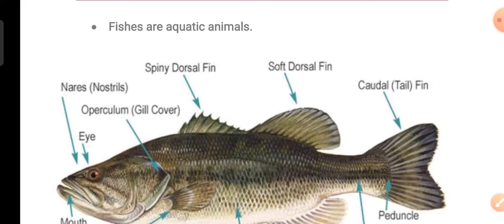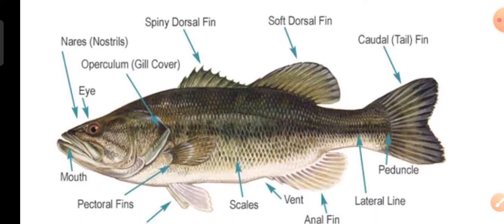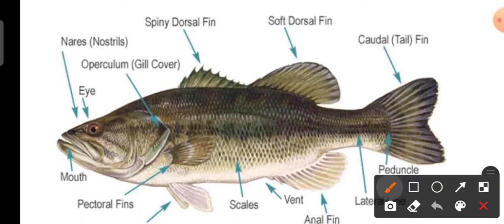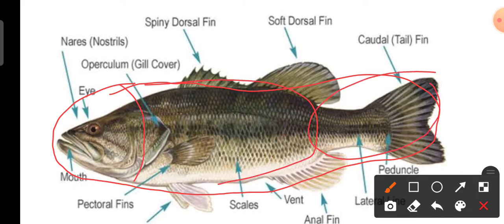Pisces are basically aquatic animals because they live inside the water body. As you can see in the drawing here, which is mentioned very clearly, the fish body is divided into three different parts: the head region, the trunk region, and the tail region. The body is spindle-shaped.